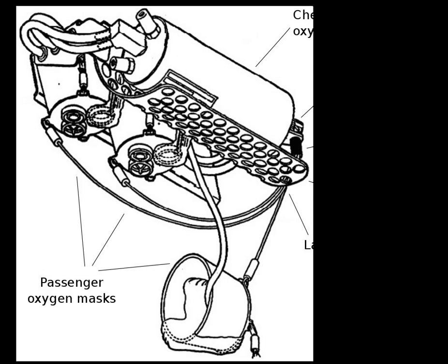A chemical oxygen generator is a device that releases oxygen via a chemical reaction. The oxygen source is usually an inorganic superoxide, chlorate, or perchlorate. Ozonides are a promising group of oxygen sources.